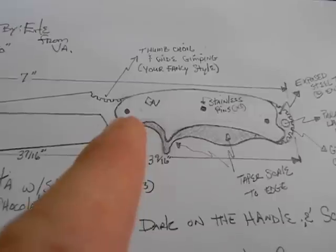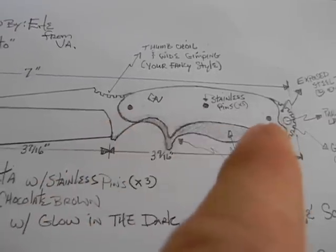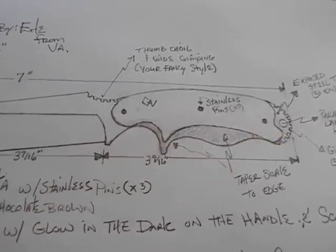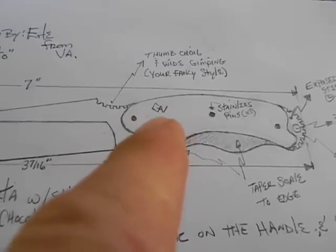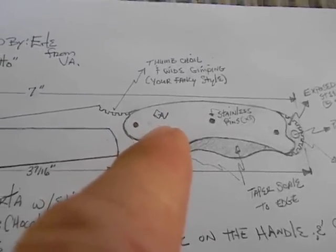I'd also like to use three stainless steel pins and then go ahead and fill them in with the glow material you got. And incorporate your initials if you could somewhere on the handle and put some glow material in there to make it pop out.